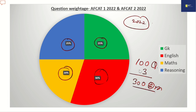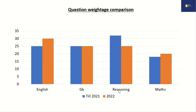We need to score at least 200 marks in order to get into the merit list. As we know, there is a lot of competition even among the recommended candidates. Looking at the comparison: in English we are getting 5 more questions, GK remains the same, reasoning has come down by 7 questions, and maths has increased by 2 questions.